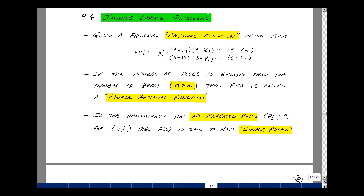Given a factored rational function of the form k times (s-z1)(s-z2)...(s-zm) divided by (s-p1)(s-p2)...(s-pn), if the number of poles is greater than the number of zeros, meaning n is greater than m, then we call f(s) a proper rational function.